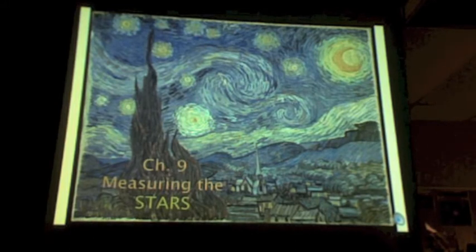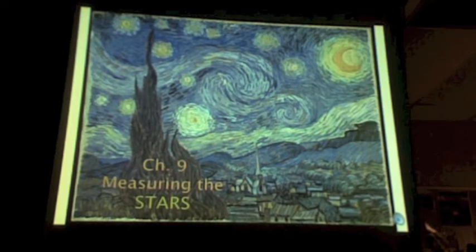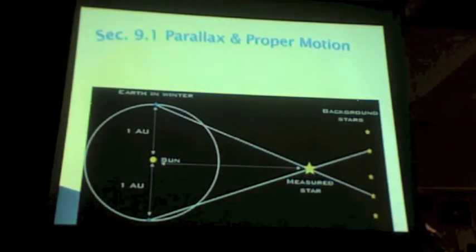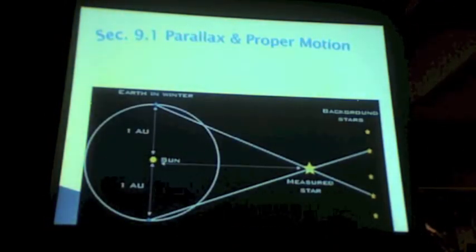So, measuring the stars. As I mentioned, this is the chapter where we find out everything. How do we know how far away things are, and how fast they're moving, and what they're made of.